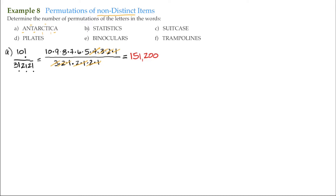The same approach applies to example B, 'Statistics.' Statistics has 10 letters, so there are 10 factorial different ways of arranging them. However, we have repeats: there are 3 S's, so we divide by 3 factorial; there are 3 T's, so we divide by another 3 factorial; and there are 2 I's, so we divide by 2 factorial.